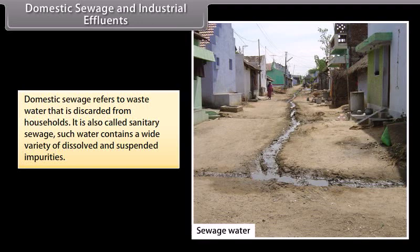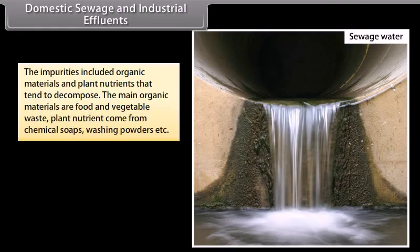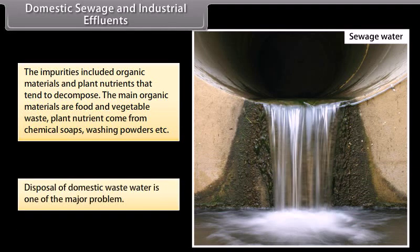Domestic sewage refers to wastewater that is discarded from households, also called sanitary sewage. Such water contains a wide variety of dissolved and suspended impurities, including organic materials and plant nutrients that tend to decompose. The main organic materials are food and vegetable waste. Plant nutrients come from chemical soaps, washing powders, etc. Disposal of domestic wastewater is one of the major problems.